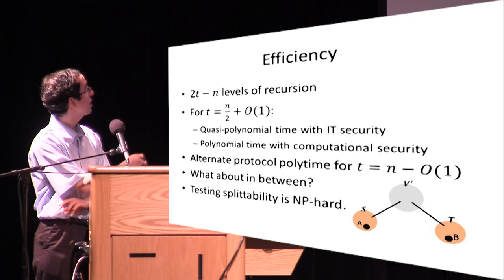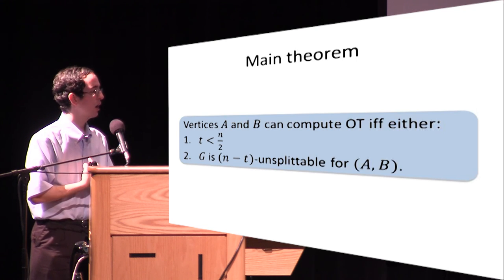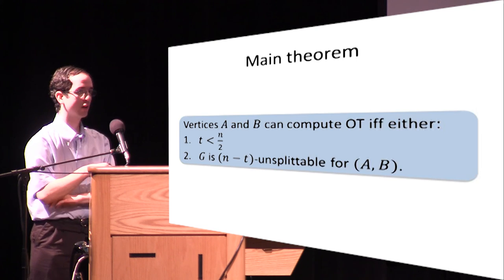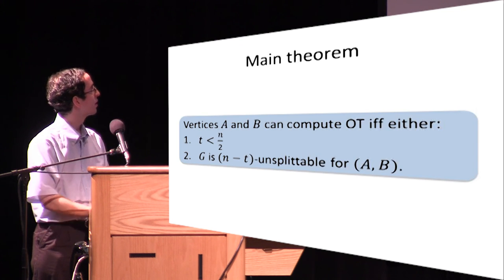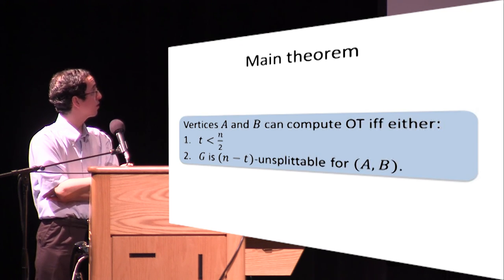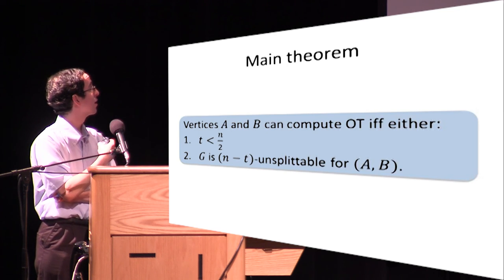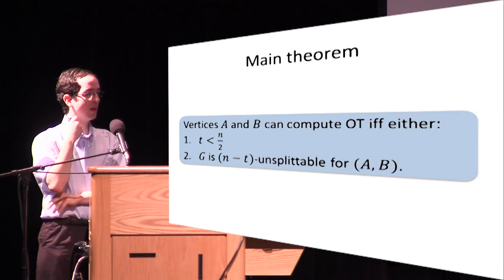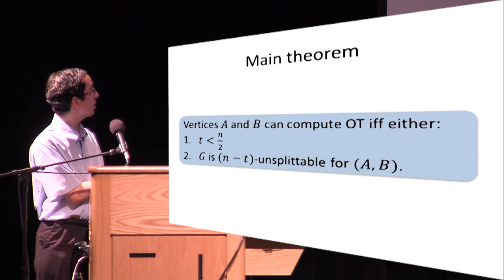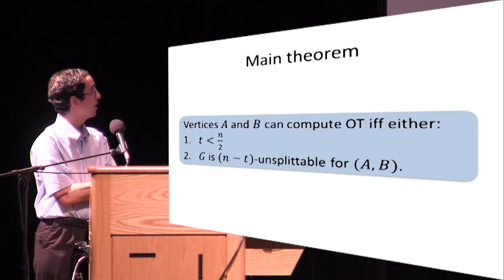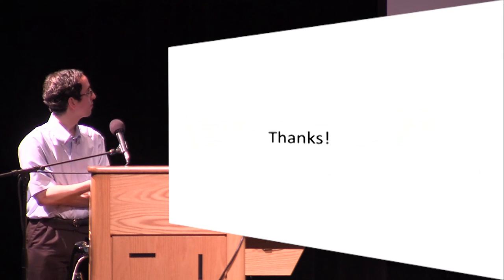To close, combining the main result with what we know in the honest majority setting: a pair of vertices can perform oblivious transfer in an OT network if and only if either we have an honest majority, or in the dishonest majority setting the graph is N minus T unsplittable.